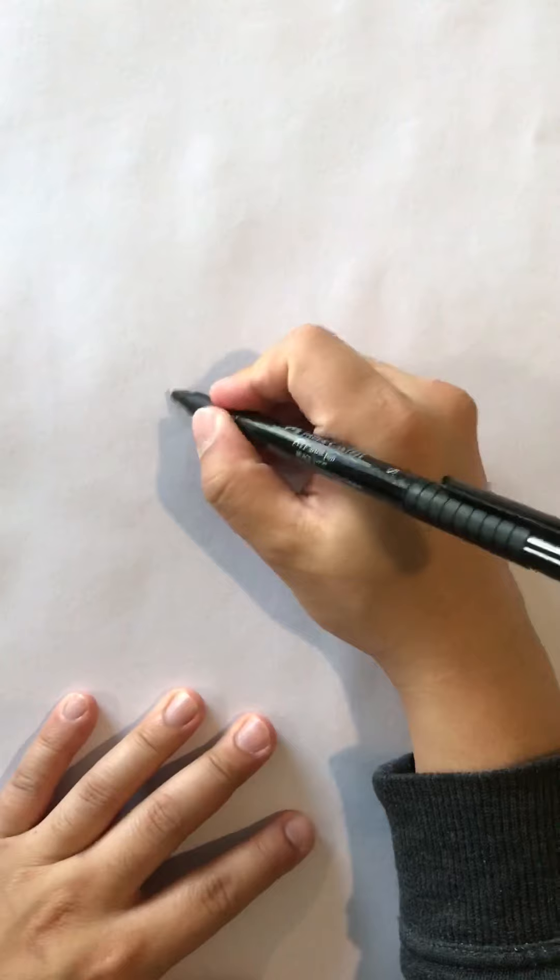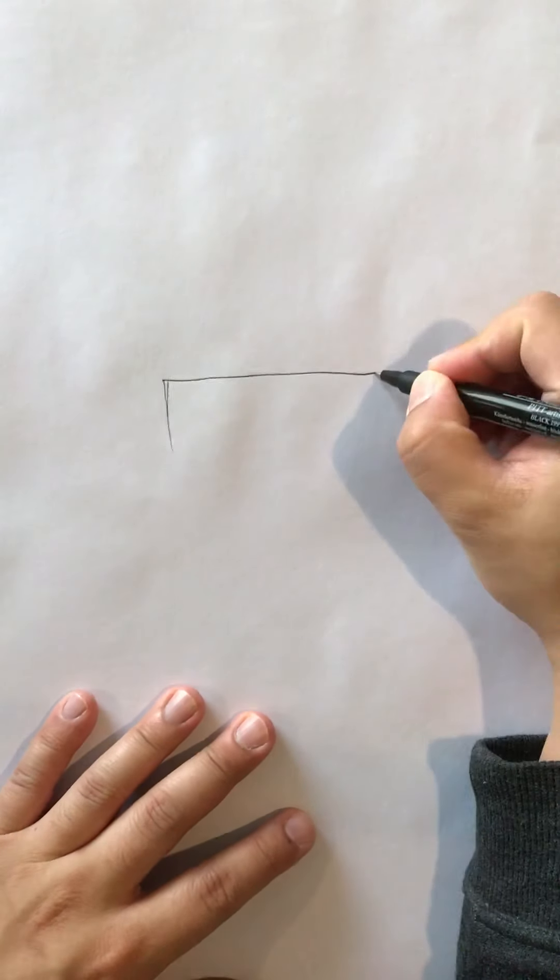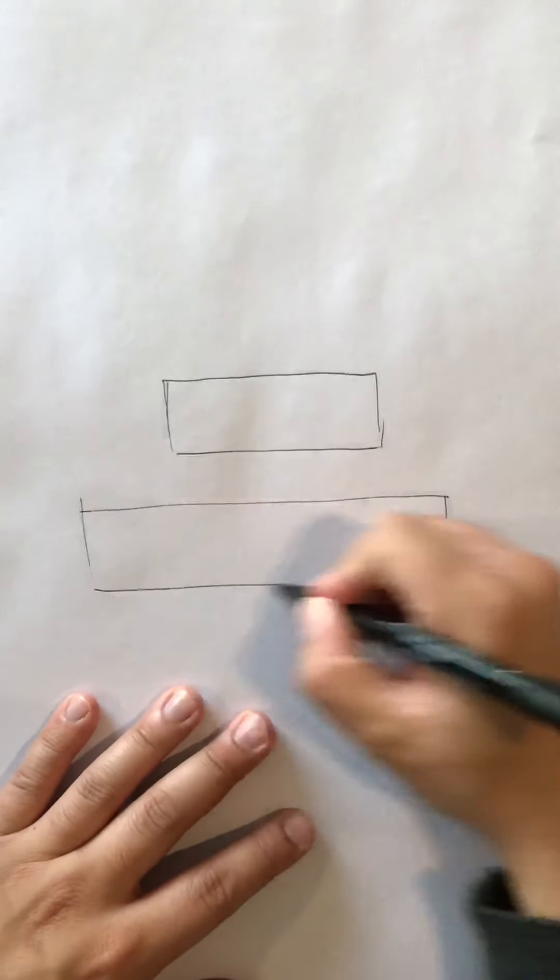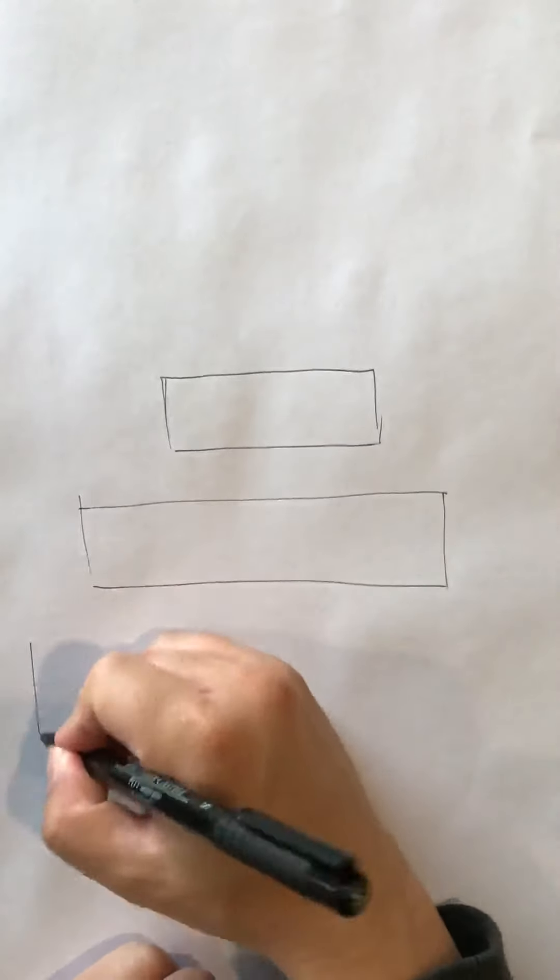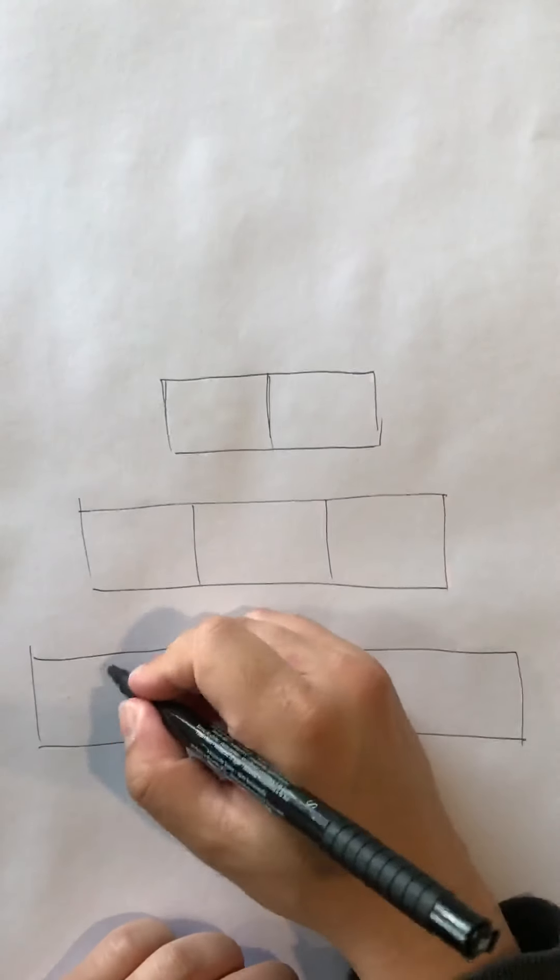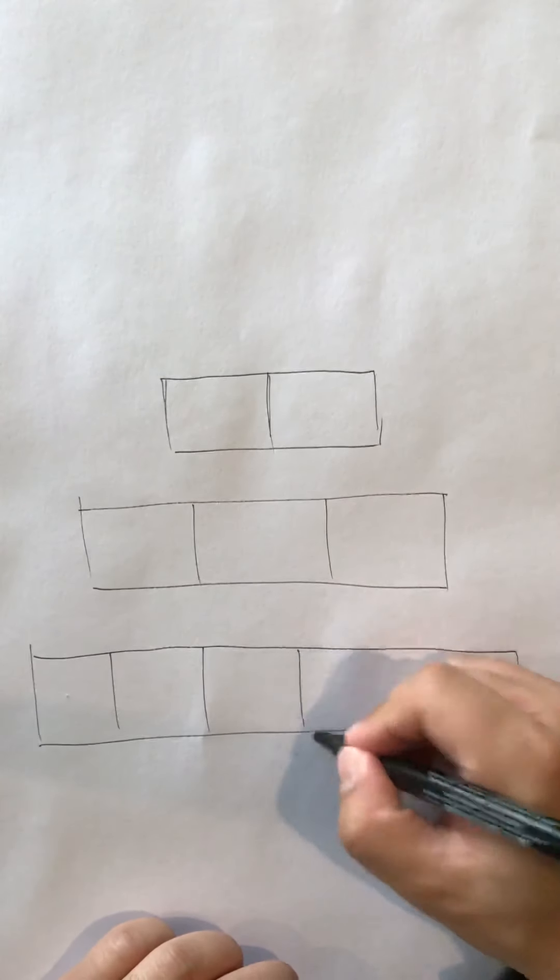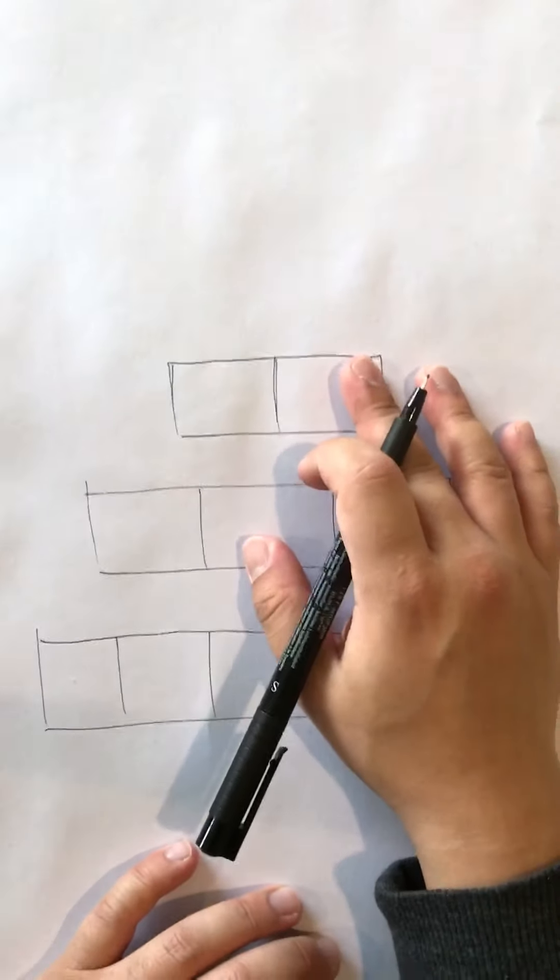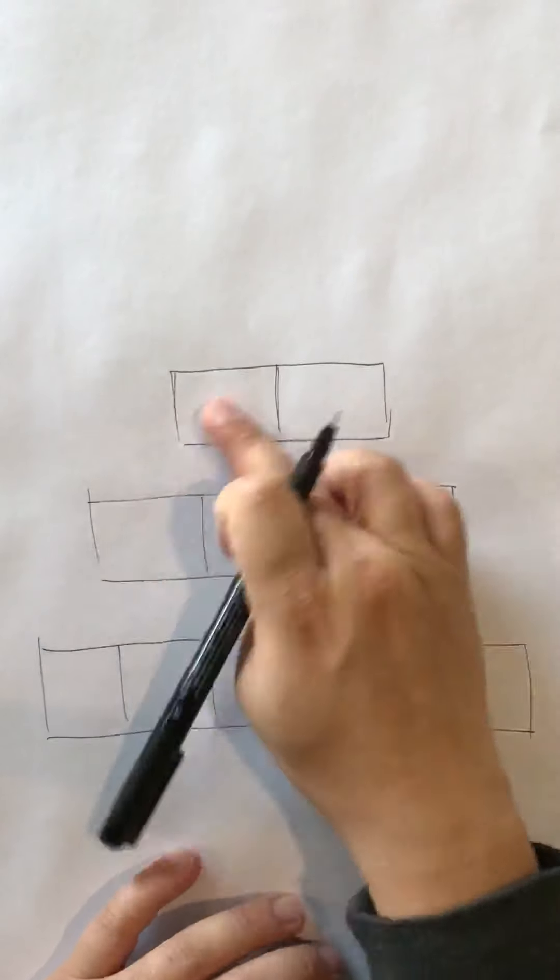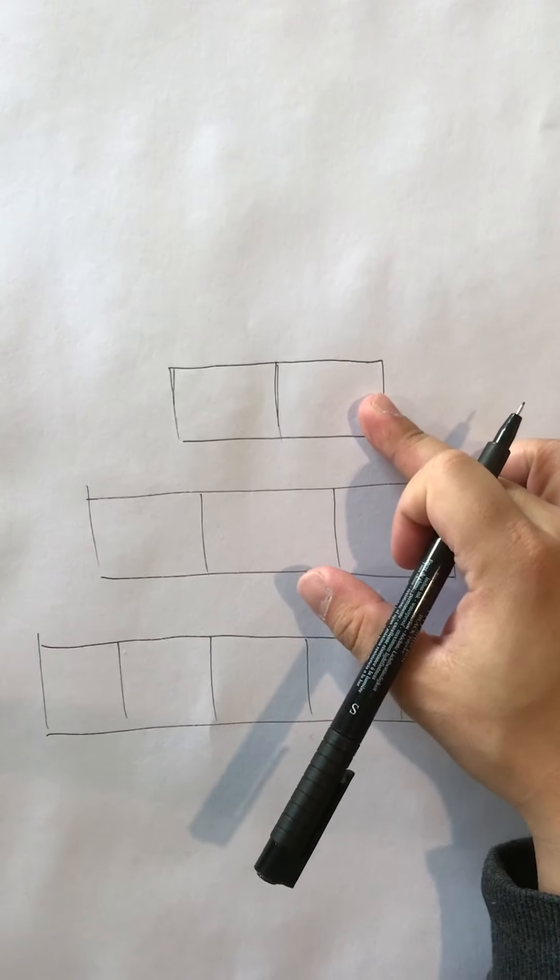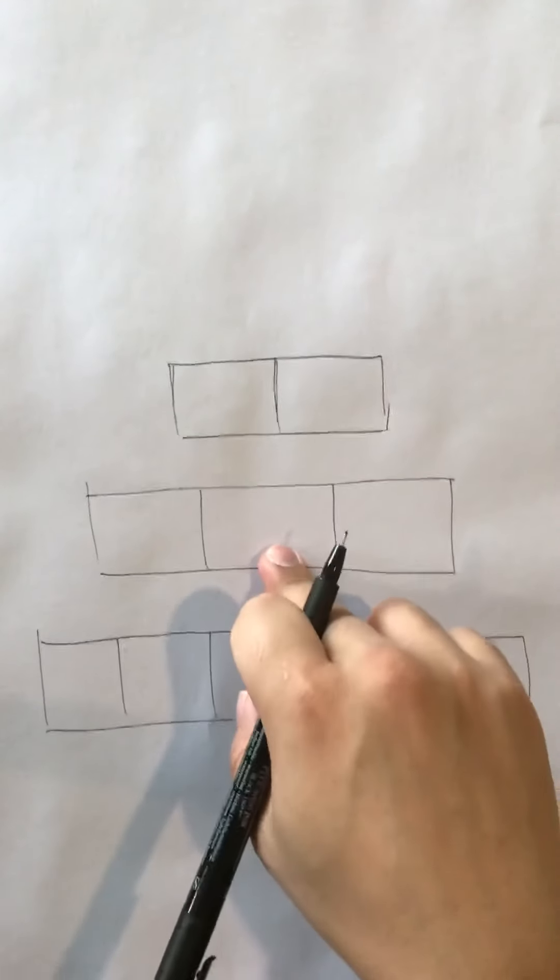To start, we're going to do a value scale. Draw a rectangle, draw a bigger one, and then draw an even bigger one. The first one divided in half, second one divided into thirds, third one divided into fifths. From here, the leftmost one will always be white and the rightmost one will be dark.